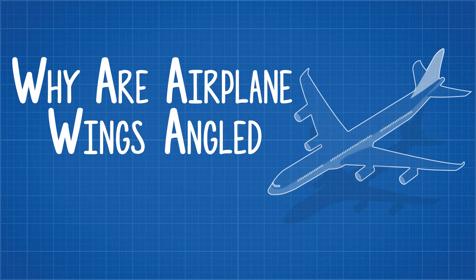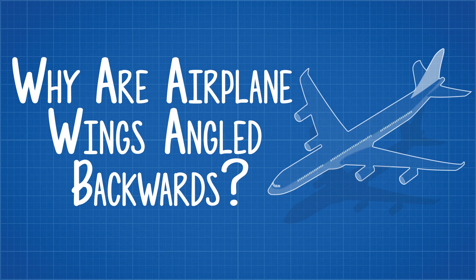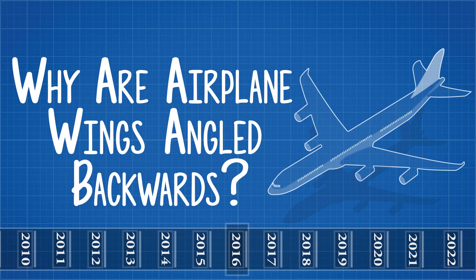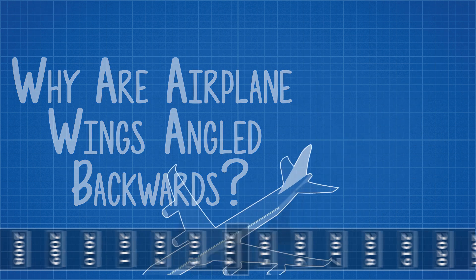Why are plane wings angled backwards? Today most planes have a swept wing design and this helps the plane fly faster, but it wasn't always this way. Let's look back in time and learn how this technology was developed and what we learned in the process.